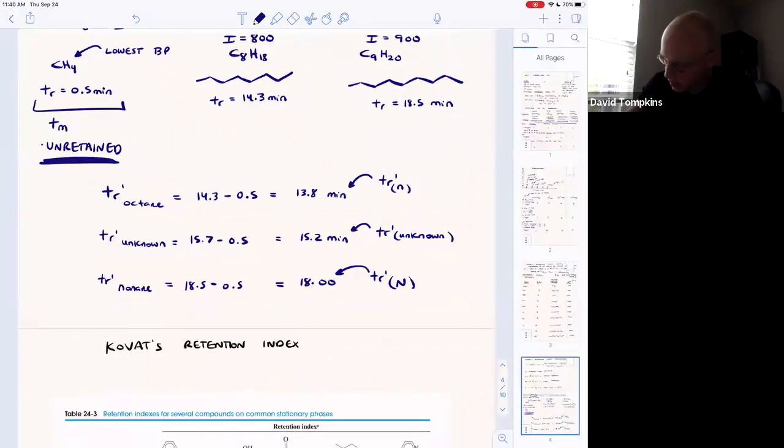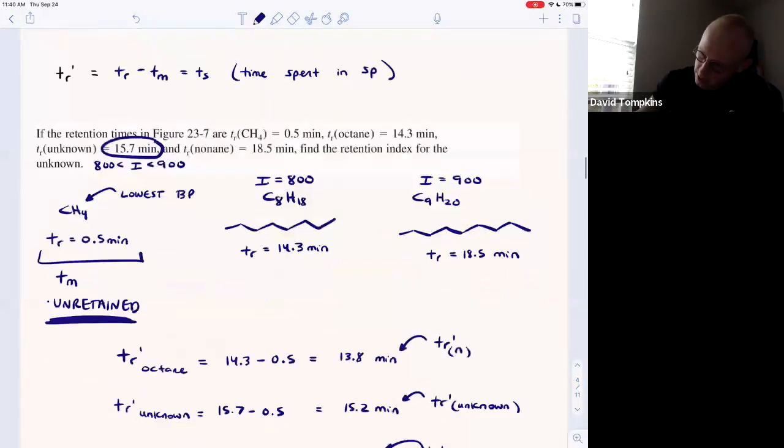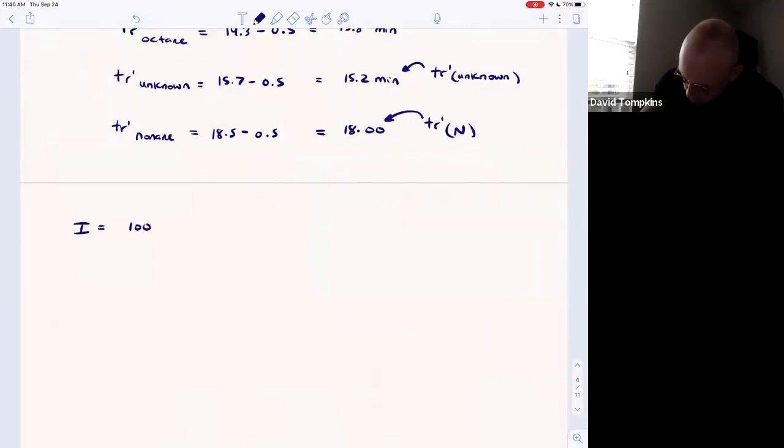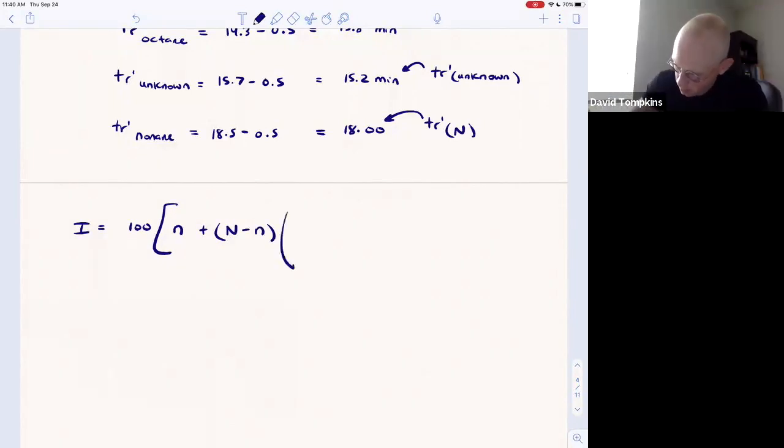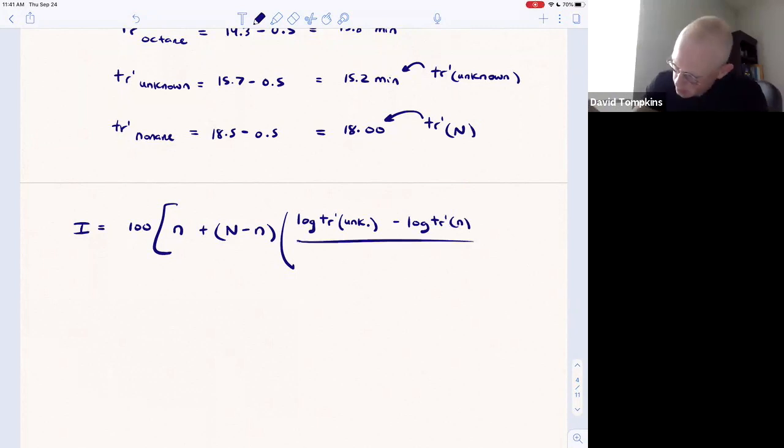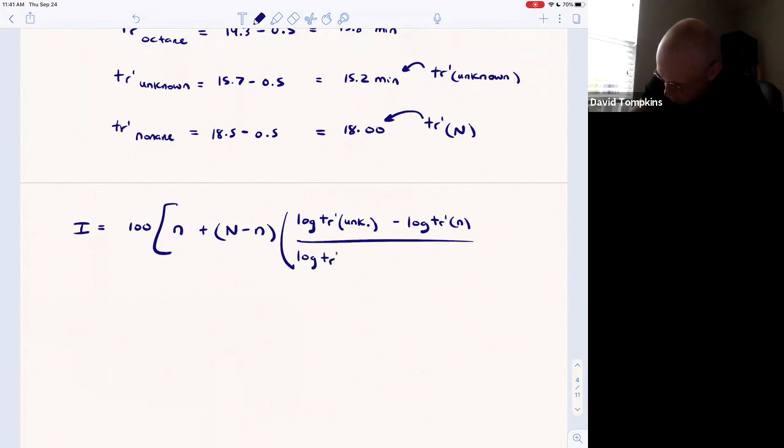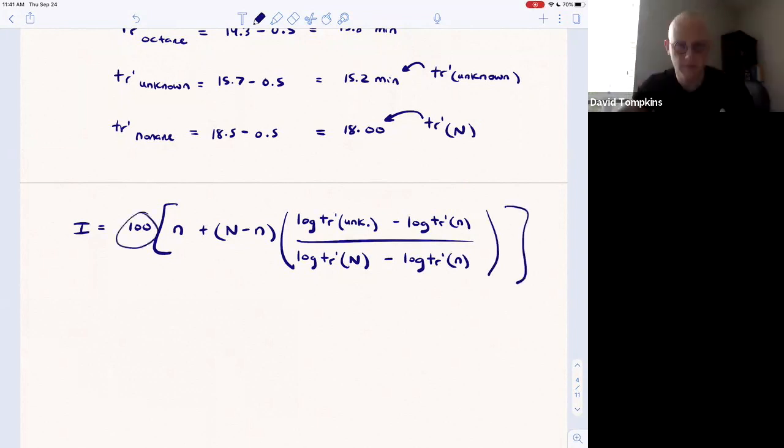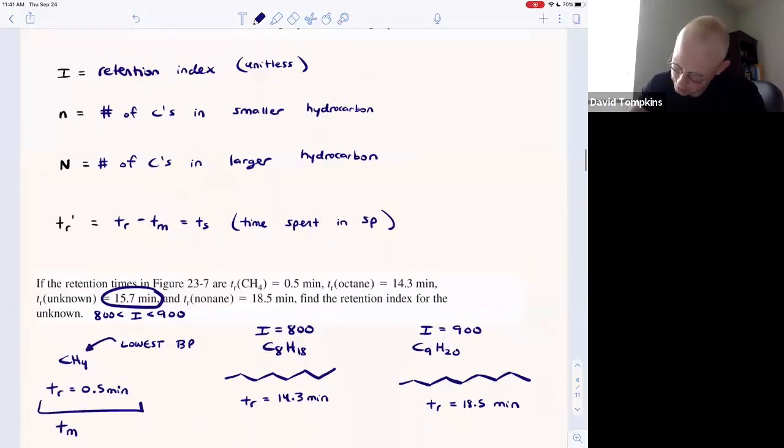Now all you have to do is plug in the formula. The Kovats retention index is equal to 100 multiplied by the smaller number of carbons, n, plus the difference of larger minus smaller, capital N minus lowercase n, all multiplied by the log of the retention time adjusted for the unknown minus the log of that adjusted retention time for the smaller number of carbon hydrocarbon, minus the log of the retention time of the larger hydrocarbon that's known minus the same term with the smaller hydrocarbon.